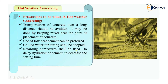You can also use retarding admixtures. In cold weather concreting we use accelerating admixtures, but retarding admixtures will delay the hydration of cement and decrease the setting time. So you can simply use retarding admixtures to delay hydration of cement — their function is to delay the hydration process and decrease the setting time.